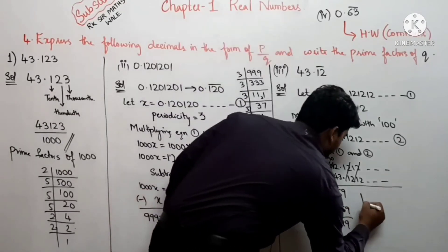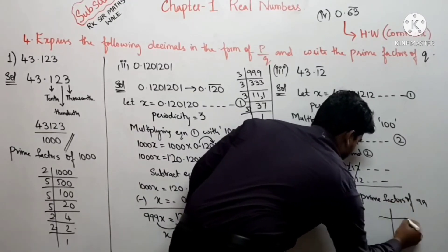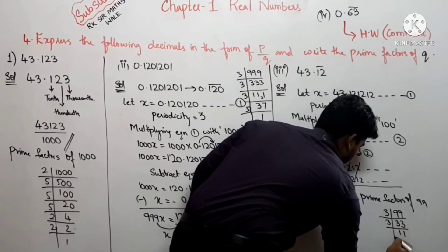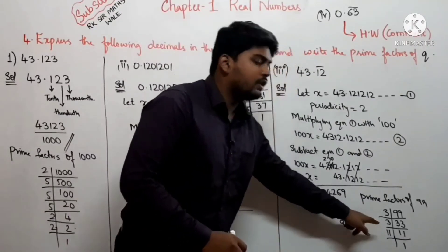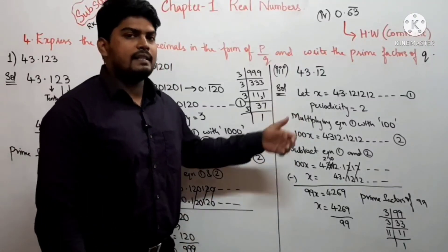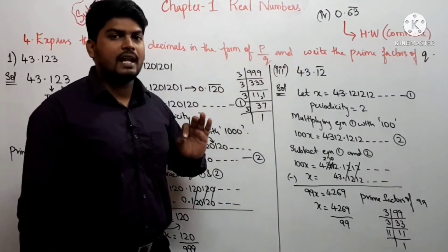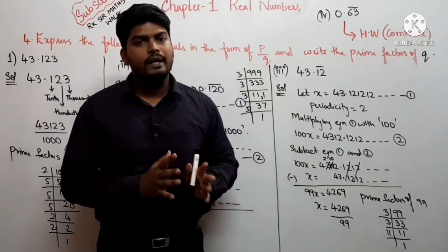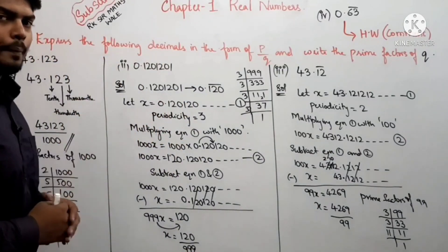Denominator 99 के prime factors निकालते हैं: 99 = 3 × 3 × 11। यह 2ⁿ × 5ᵐ के form में नहीं है, इसलिए यह भी non-terminating decimal है। यह थी आपकी complete exercise 1.3 — I hope आपको help मिली होगी। जल्दी से screenshot भी ले लीजिए ताकि आप notes में copy कर सको।